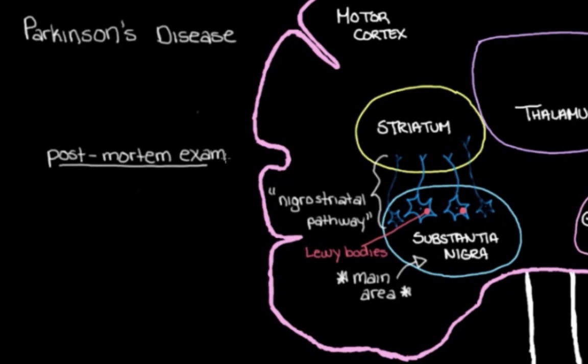so after the person has died and we're looking at their brain, these Lewy bodies are actually the main thing that we see in the brains of people with Parkinson's disease.